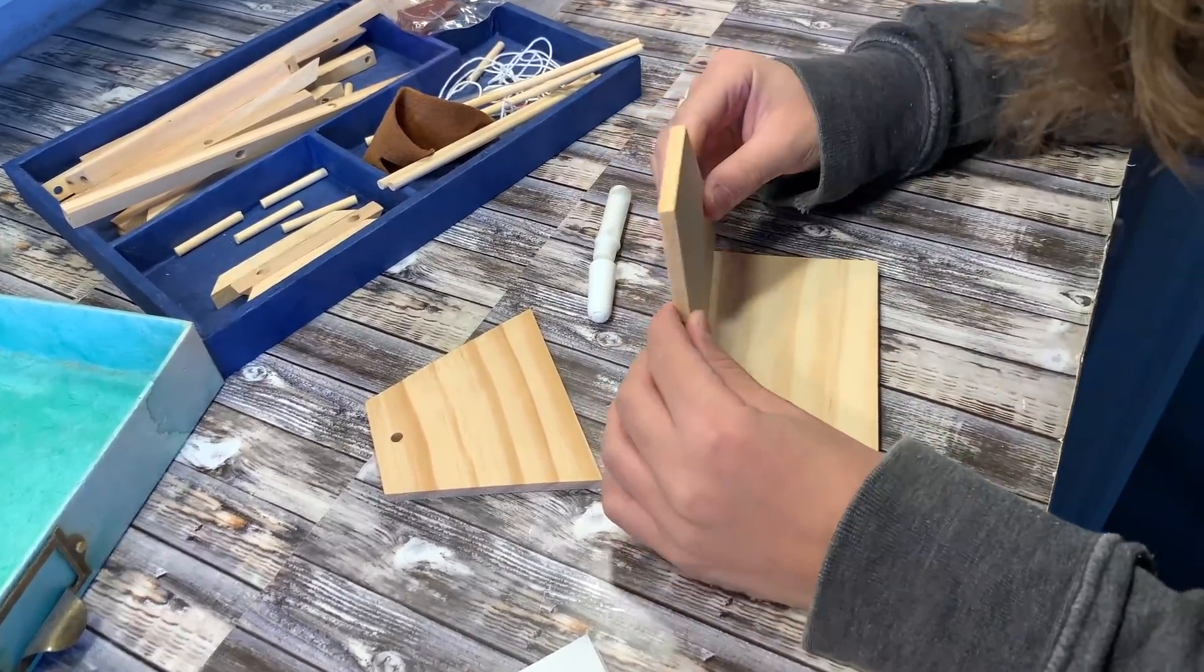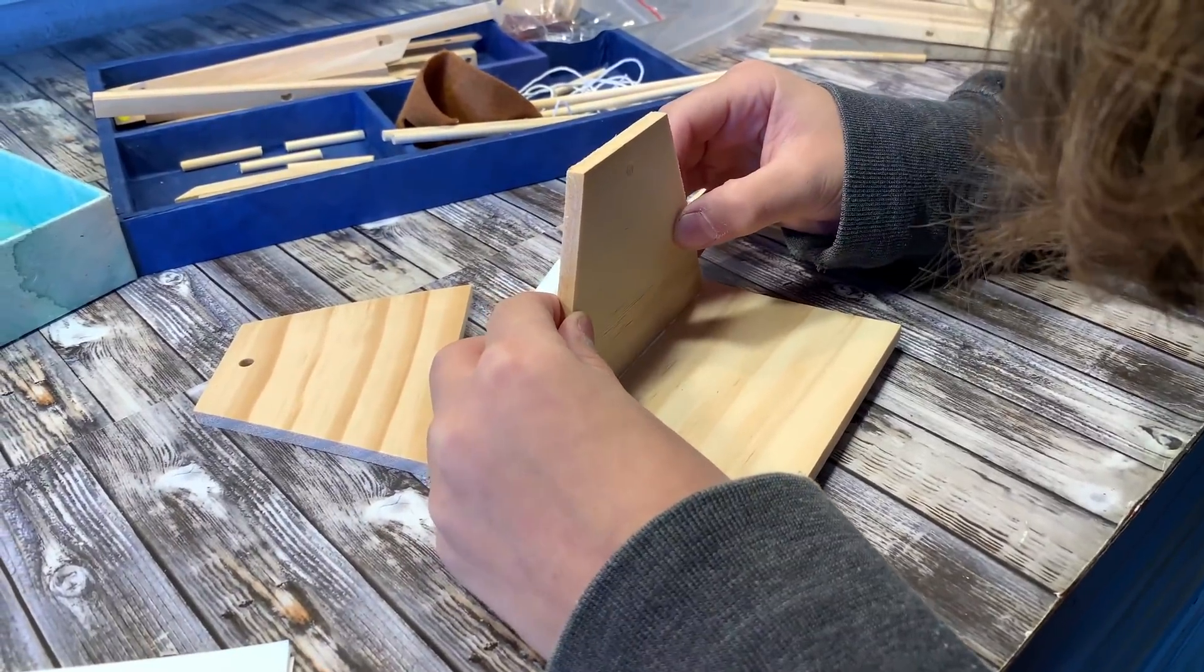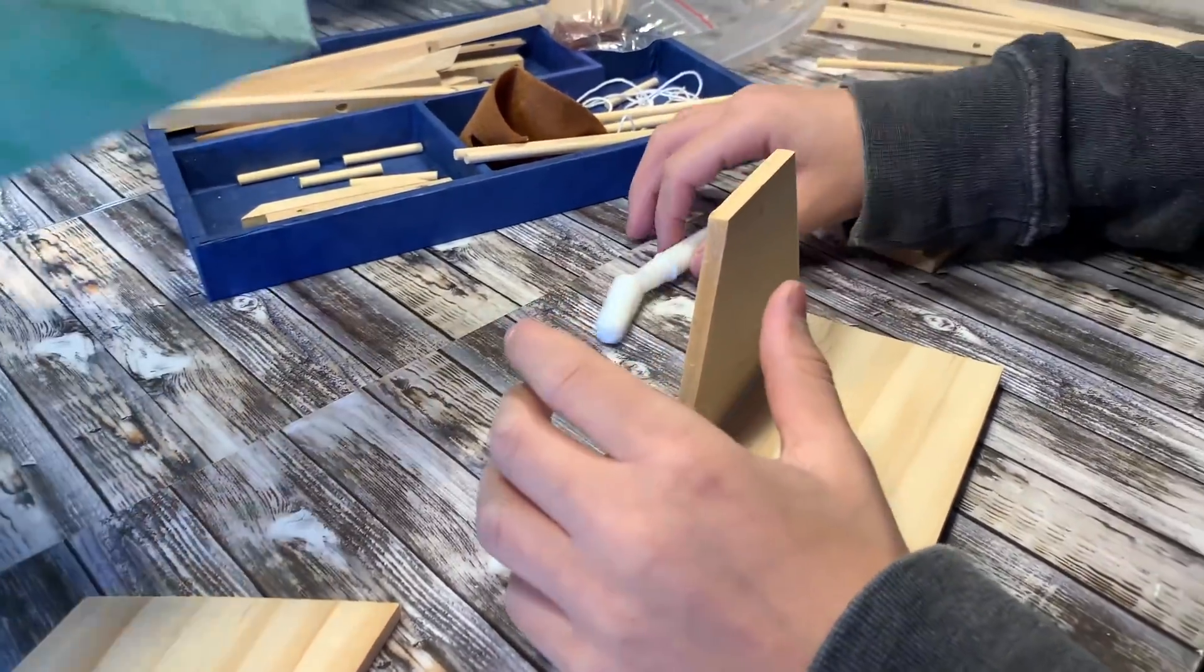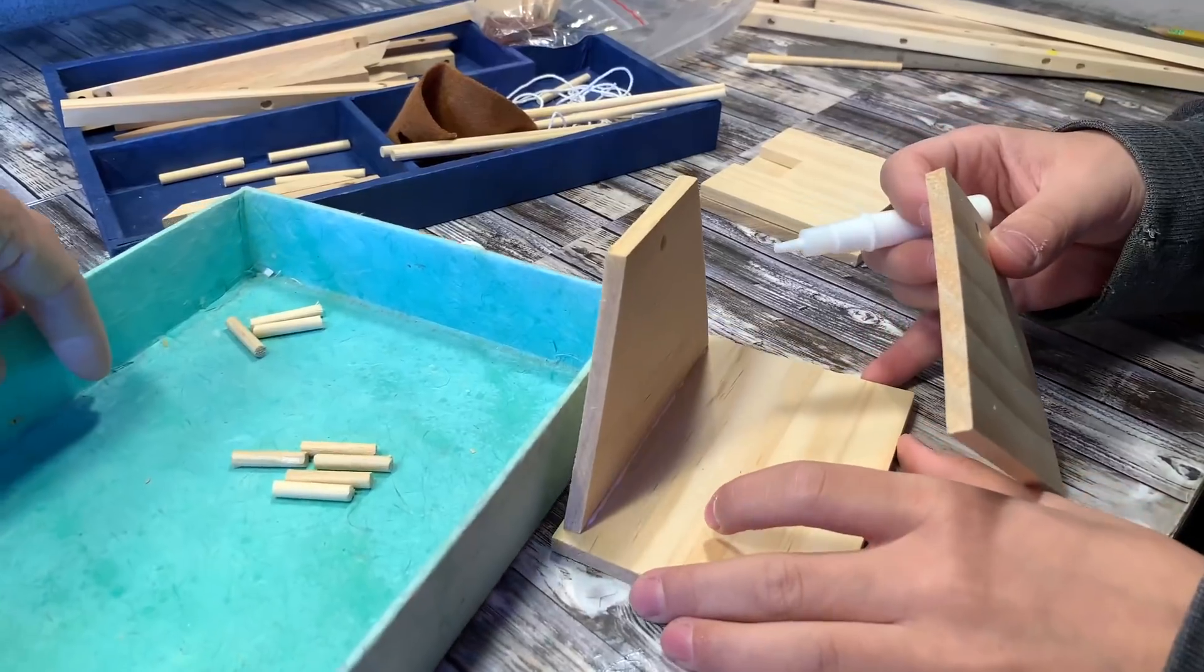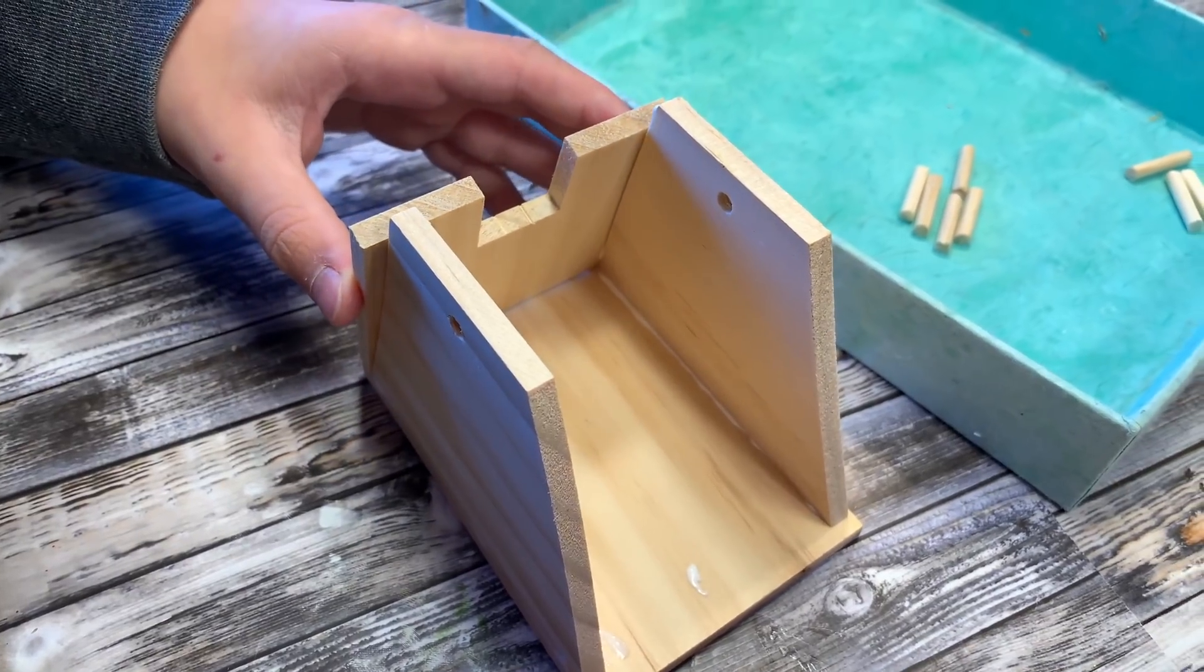Okay, so once we got all those pieces cut down, it was time to glue together the basket part of the trebuchet. We're going to use all those little cut pieces a little bit later on, but you can see them in that tray right there.